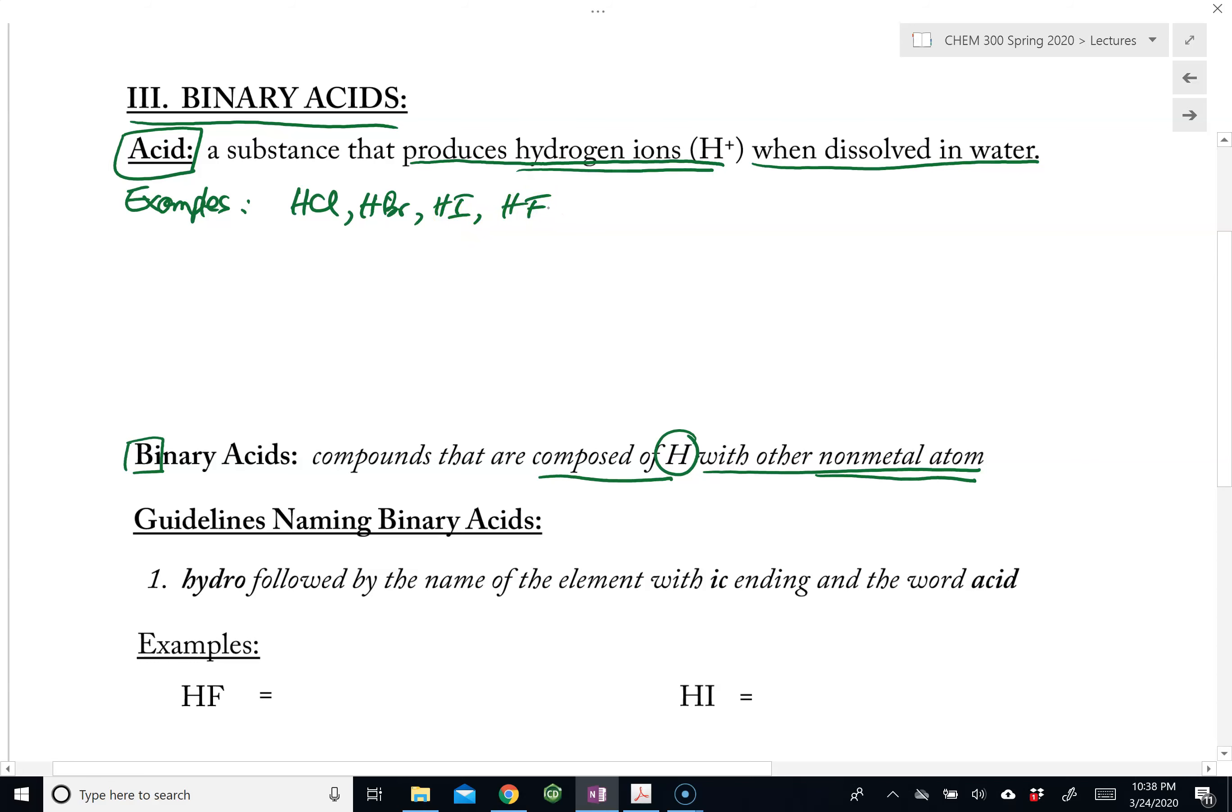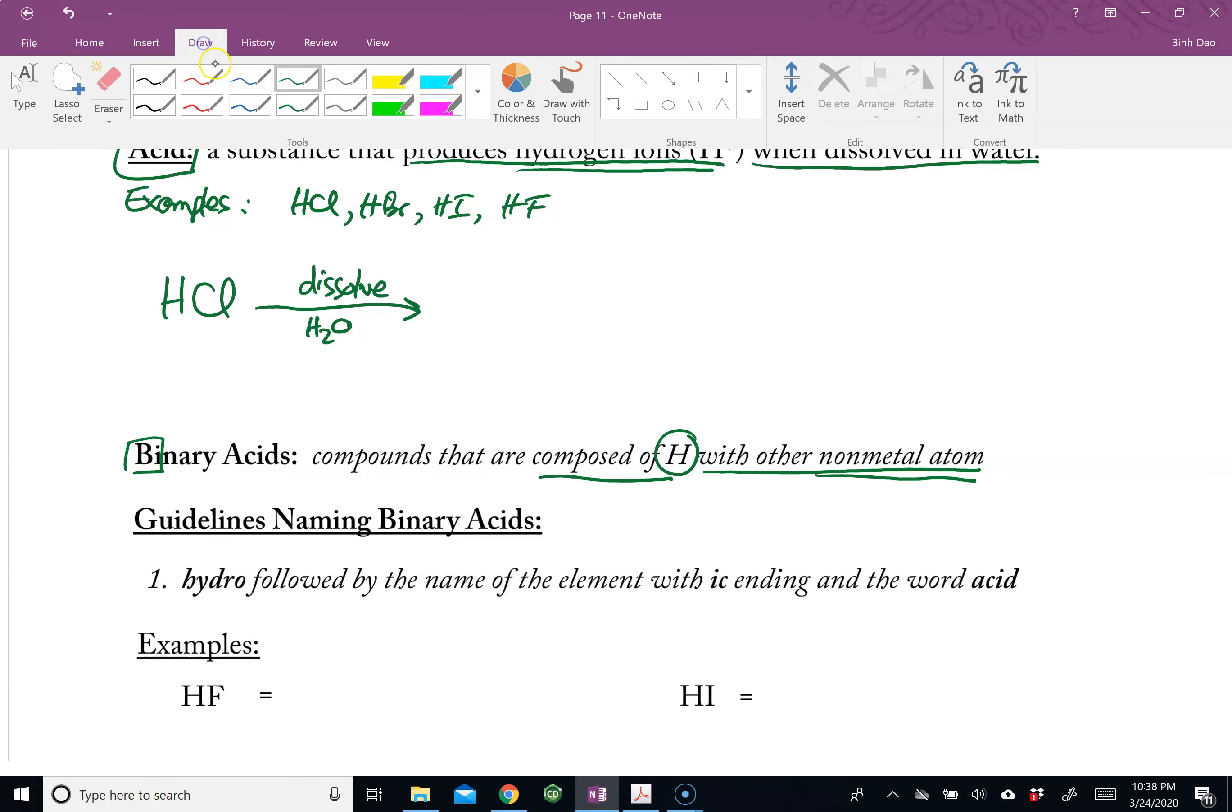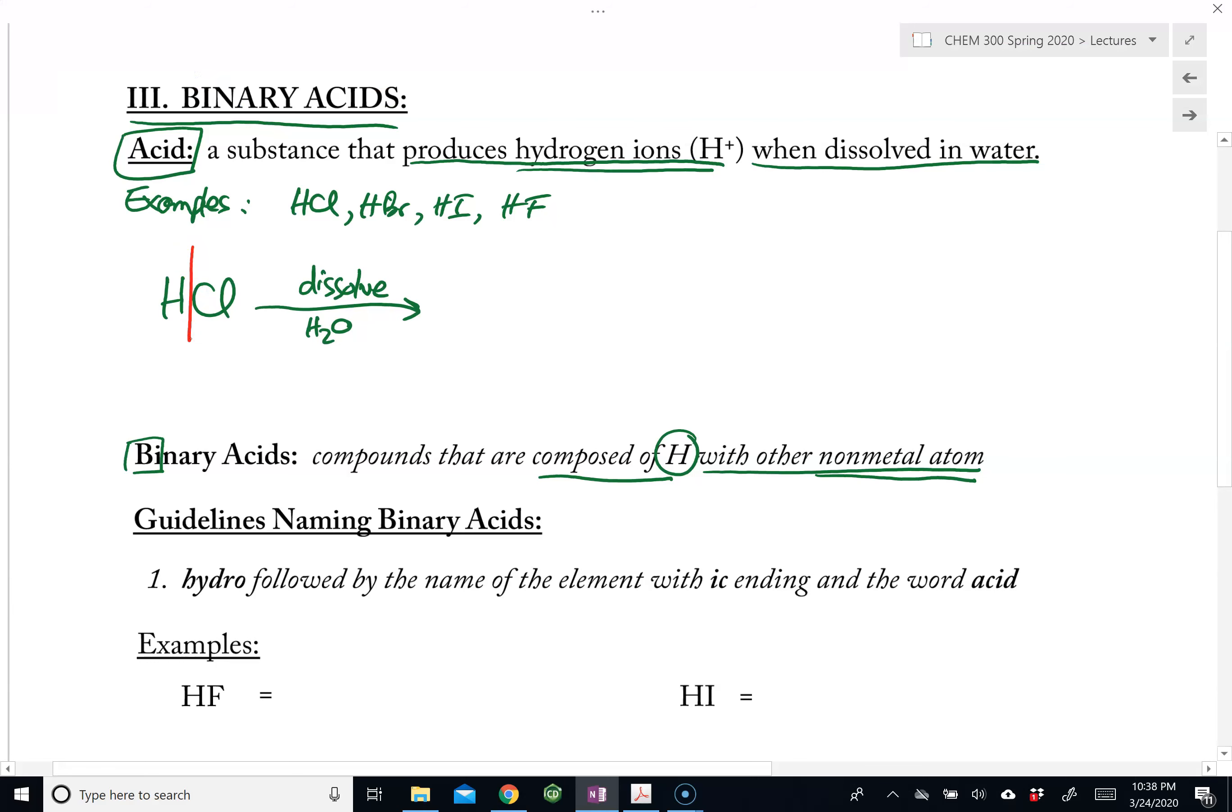The reason why we call these acids is as follows. If we were to take HCl, which is a binary acid, and dissolve this in water, what happens is that the HCl would dissociate and produce this hydrogen ion. So it breaks apart between the hydrogen and the chlorine. The hydrogen becomes the cation, and this is the hydrogen ion.